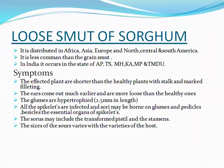When it comes to the symptoms of loose smut of sorghum, the affected plants are shorter than the healthy plants with stalks and more tillers. The ears come out much earlier and are more loose than the healthy ones. The glumes are hypertrophied — this is one of the important characteristics for identification of loose smut of sorghum. This hypertrophy is concentrated, about 2.5 mm in length.